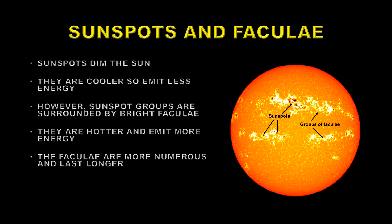And they also last longer. When the sunspots have disappeared, which they do over a period of a few weeks, then the faculae remain for perhaps several rotations. So the overall effect is that the Sun emits more energy when there are sunspots around due to the faculae than is reduced by the amount of energy lost from the sunspots.